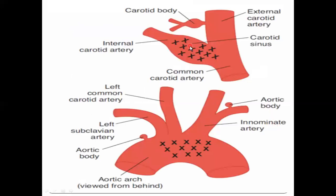Baroreceptors are present in the aortic arch and the carotid sinus. We have the carotid sinus and the baroreceptor located there, and also in the aortic arch. The aortic body is present near the aortic arch, and the carotid body is present near the carotid sinus. These aortic and carotid bodies serve as the chemoreceptors.